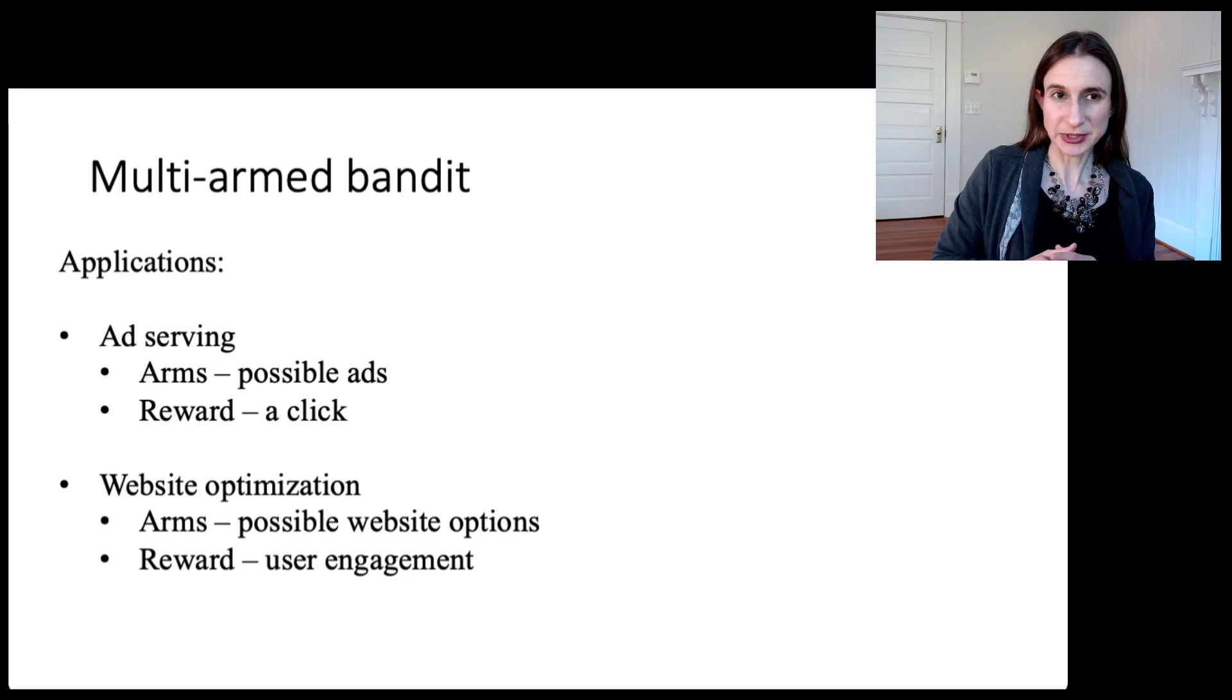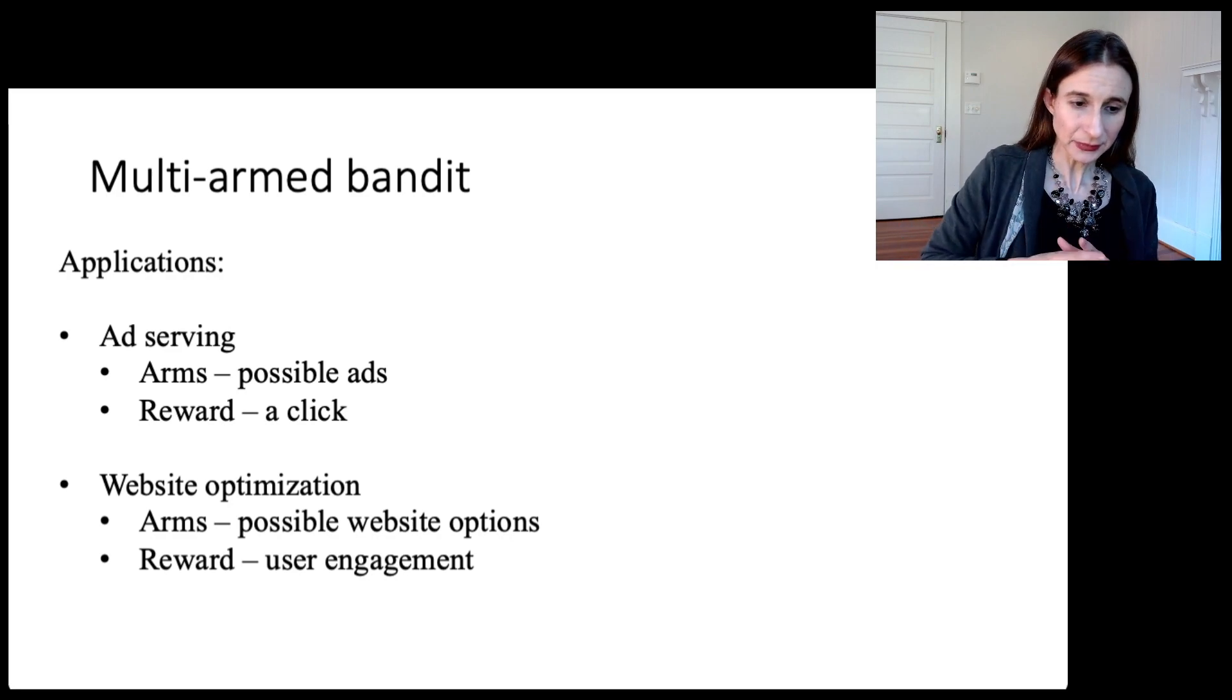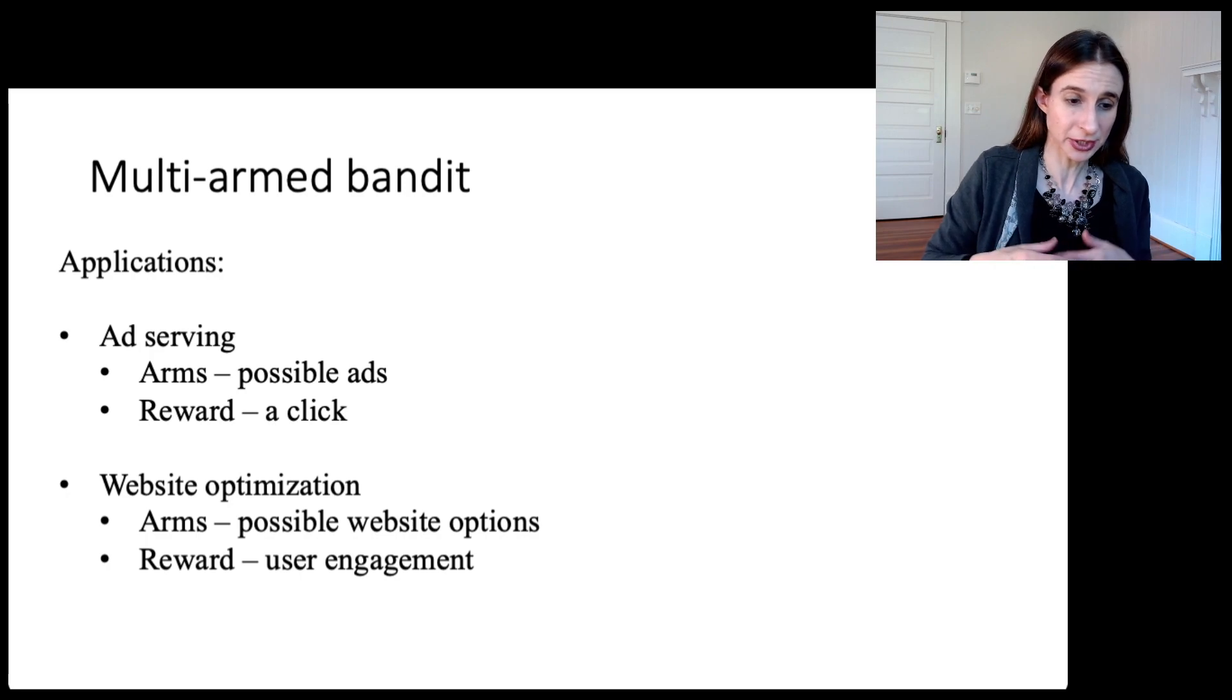Also website optimization. Let's say you have a website and you're trying to optimize the way it looks so that it's more functional and more aesthetic. The different arms would be possible website options and you could edit your website as users are going to the website and explore different configurations to see which configurations are getting better user engagement. You have some measure of user engagement that you're using as your reward.